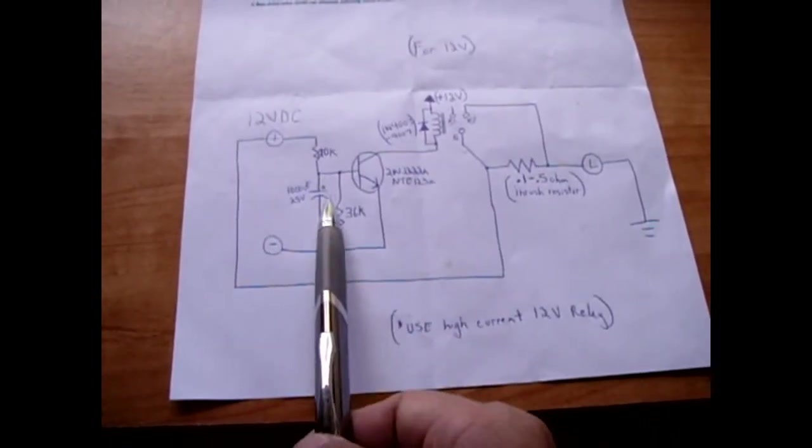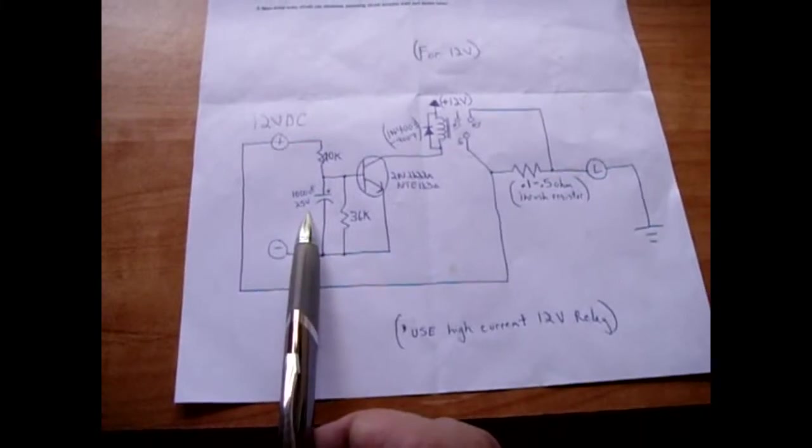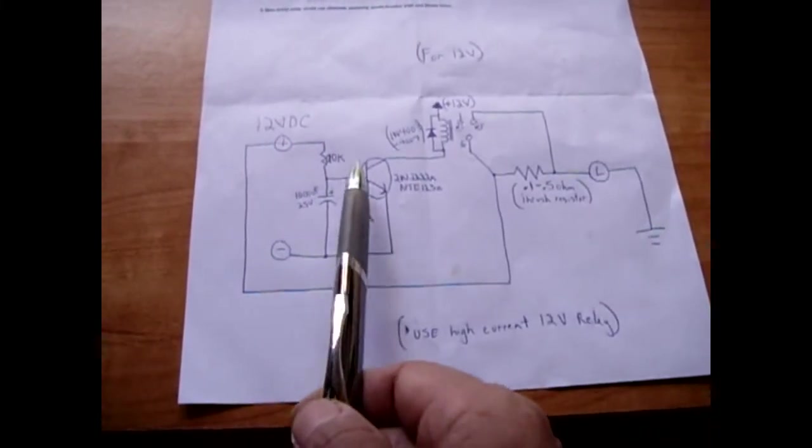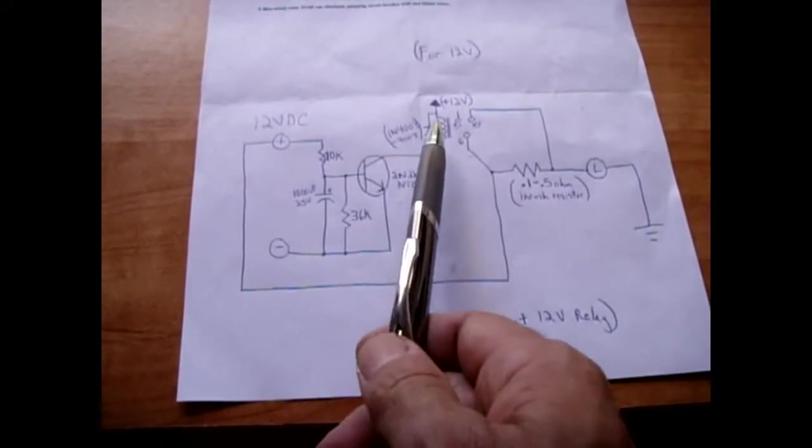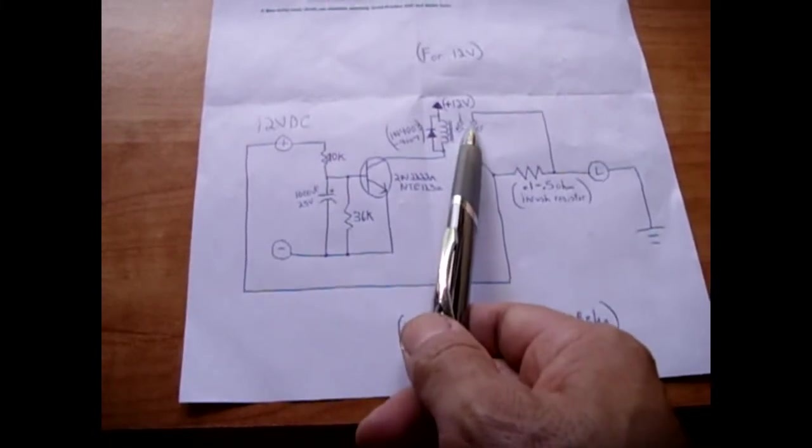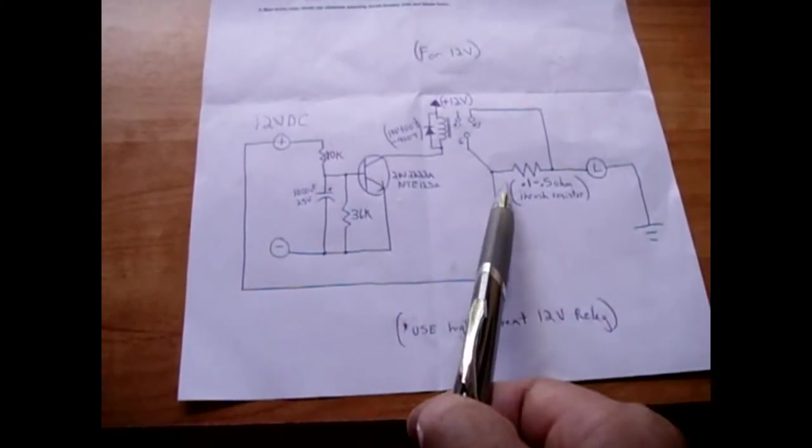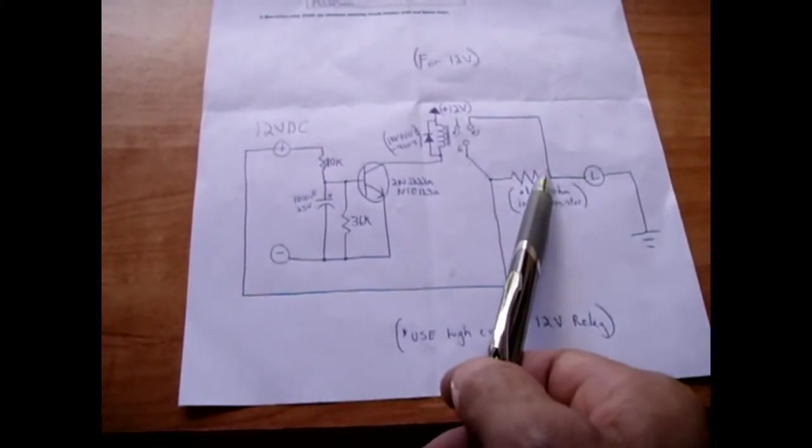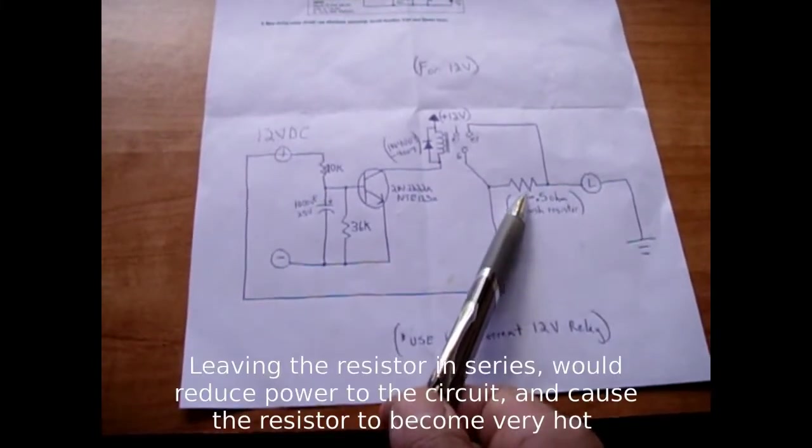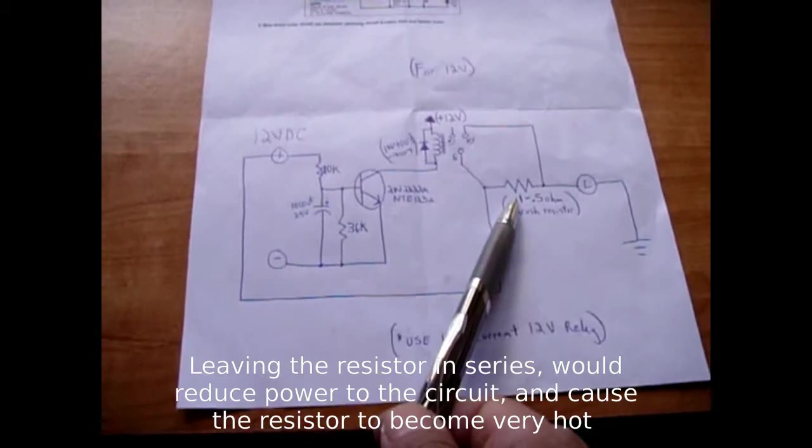Once this connection is made at the battery, at the exact same time you have current flowing through this 20k, slowly charging this 1000 microfarad capacitor. Once this charges up in voltage, this transistor will turn on, allowing the relay to activate, closing the contacts between the normally open and the common, and then you effectively bypass the resistor.